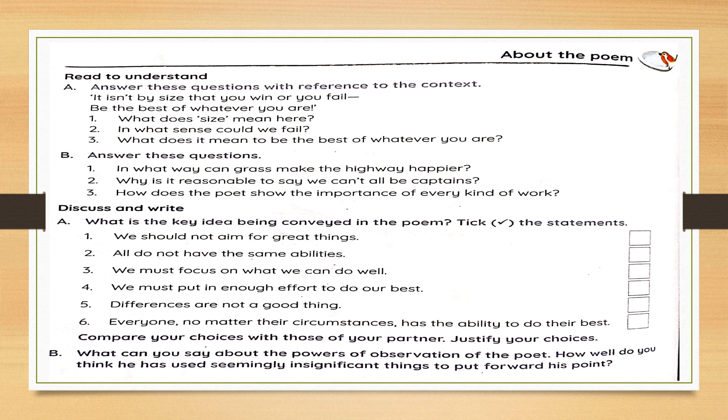The poet says here that size doesn't matter as the success of a person depends only on how good they are, what they do. If one can't be the gigantic sun, they should just be happy being the twinkling star. A person, no matter how big or small in size or stature, should make a noticeable contribution to the society they live in. In what sense could we fail? A person could fail not by the size of their accomplishment, but by the quality of it. They should try to be the best at whatever they do, no matter how big or small it is. Come to question number three. What does it mean to be the best of whatever you are? It means that a person should strive to be the best at whatever they do. They should make contributions that are noticeable for which one needs to be the best in their respective fields, no matter the accomplishment.